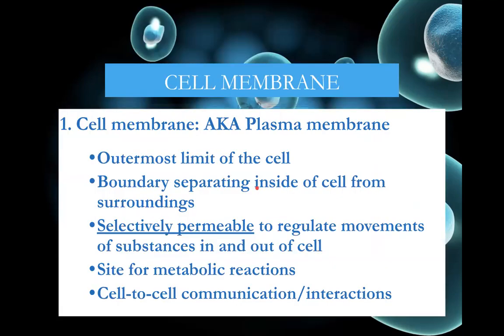The cell membrane is also called the plasma membrane, so those terms can be used interchangeably. It is the outermost limit of the cell, separating the inside from the outside. It is selectively permeable because it lets some things in and some things out, depending on what it is, how big it is, and whether it's charged. The cell membrane is also the site for metabolic reactions involving energy and certain chemical reactions, and it's responsible for communication with other cells.